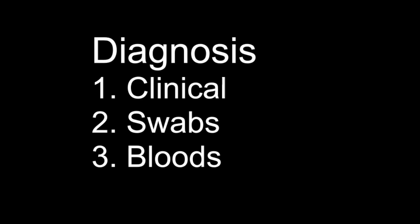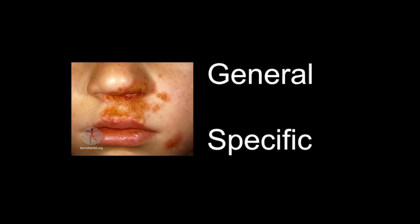Histology of impetigo is beyond the scope of this video, but if you're interested in the histological characteristics of the different types, check out DermNet via the link in the description. In terms of general treatment, basic measures include cleansing the wound, using moist soaks to gently remove crust, and applying antiseptic two to three times daily for five days.